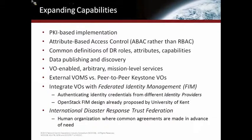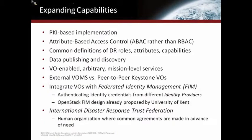Looking at things we could do to expand capabilities: for this demo we did a very simple account name and password implementation. For any real-world application, we would want to do a PKI implementation. If we did that, we could also do attribute-based access control as opposed to role-based. When you log into a VOMS with a PKI cert, it could issue a proxy cert that has all of your VO attributes built into it — that's how we would implement attribute-based access control. We also need common definitions for what the disaster response roles, attributes, and capabilities are. And even though we can provide a list of files across different clouds, just providing file names doesn't mean you'll understand what's in those files — that's the semantic interoperability problem.